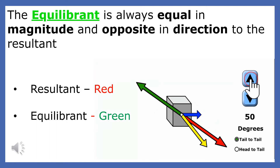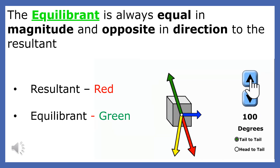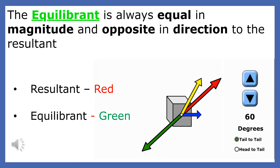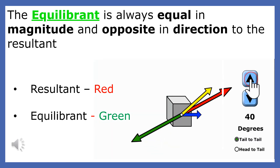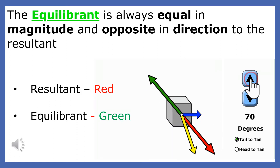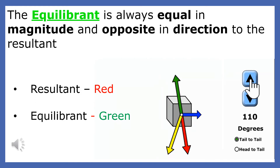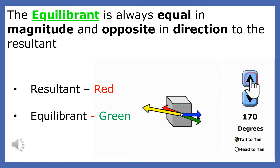In this animation, the red force represents the resultant of the yellow and blue forces, and the green force represents the equilibrium of the yellow and blue forces. Notice that the equilibrium is greatest when the angle between the yellow and blue vectors is small, and the equilibrium is at its minimum as the angle between the two force vectors approaches 180 degrees.